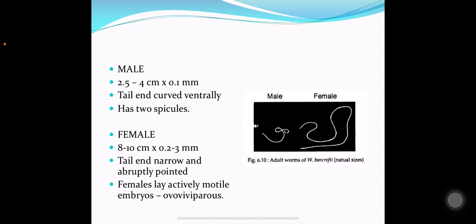The male worms are 2 to 4 cm long. The tail end is curved ventrally and has two spicules. The female worm is 8 to 10 cm long. The tail end is narrow and abruptly pointed.